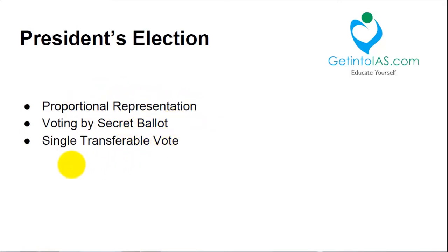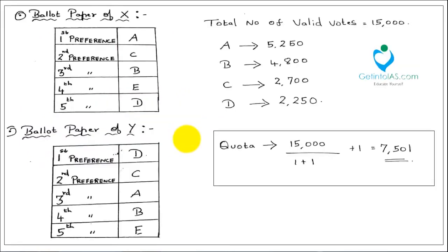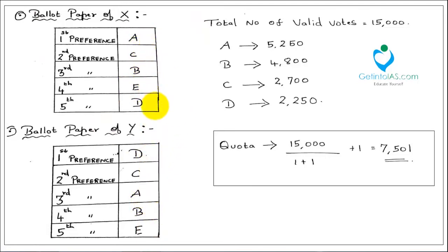The second component is secret ballot, and the third is the single transferable vote system, which we will now see with an example. The ballot paper given to every member of the electoral college contains a preference table: first, second, third, fourth, and so on. Say four candidates — A, B, C, and D — are contesting. Voter X prefers A as first preference and C as second, and so on. Voter Y prefers D as first preference, and it continues. Members indicate their preferences on this ballot paper.